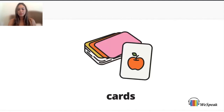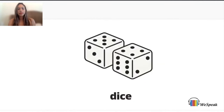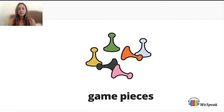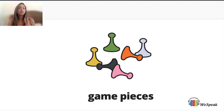Cards. Dice. Game board. Game pieces. One piece, two pieces. Don't forget that the plural form has two syllables.